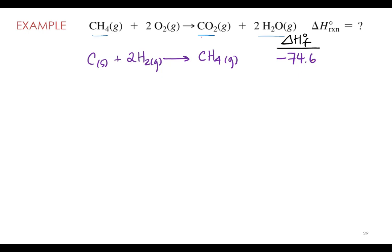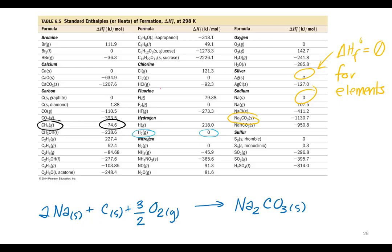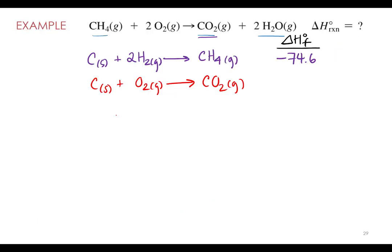Next we need the heat of formation reaction for CO2 — we'll skip the elements. We make one mole of CO2 from carbon and oxygen, and if you look at that equation it's already balanced. Looking up the standard enthalpy of formation for carbon dioxide, it is negative 393.5 kJ/mol.